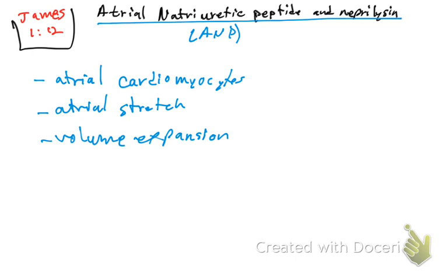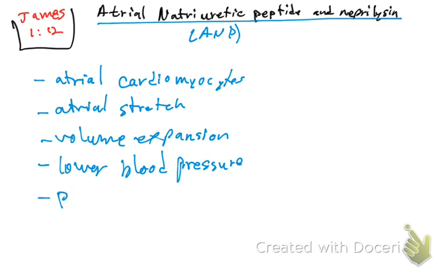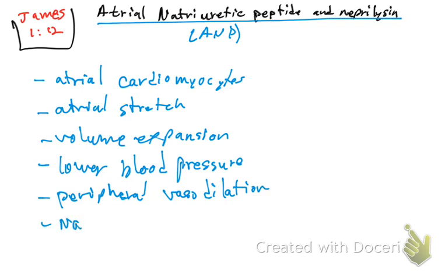So what does ANP do? It is going to lower your blood pressure. How? Because it is going to cause peripheral vasodilation.